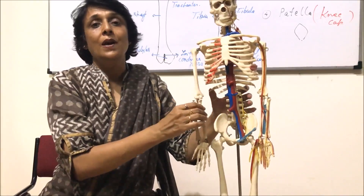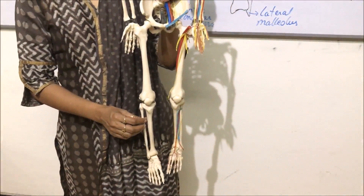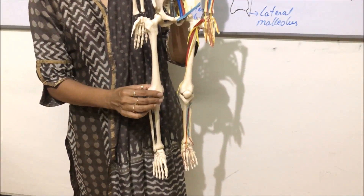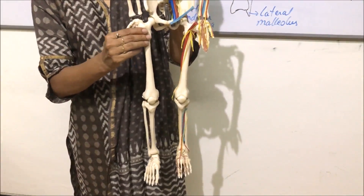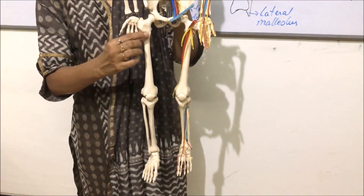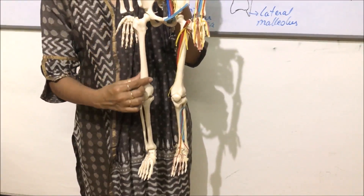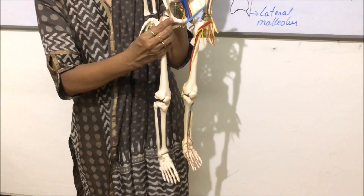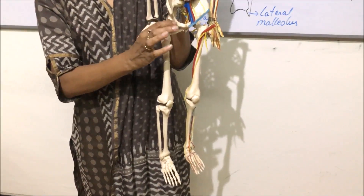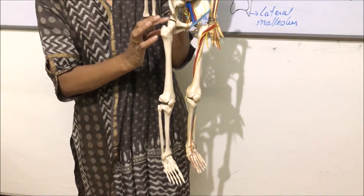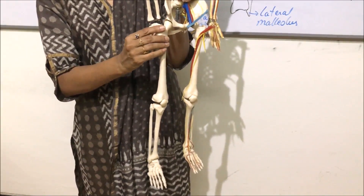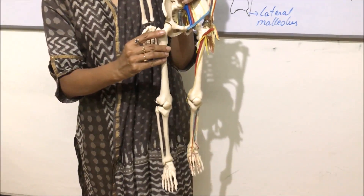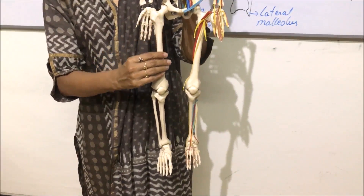Now let us talk about the hind limb. This long bone is the thigh bone or femur. The head is at an angle to the shaft and it fits into a cavity called the acetabulum, which is the cavity in the pelvic girdle where the three bones of the pelvic girdle fuse. The head of the femur fits into the acetabulum and makes a ball and socket joint. The femur is the longest and also a very strong bone.